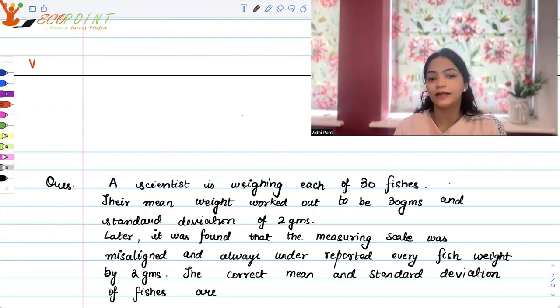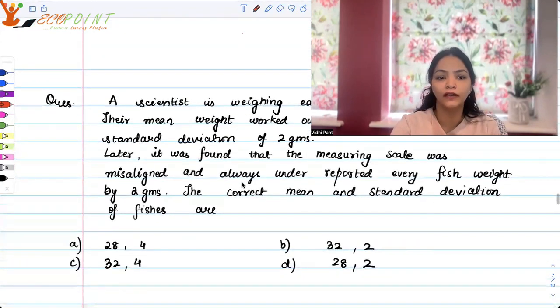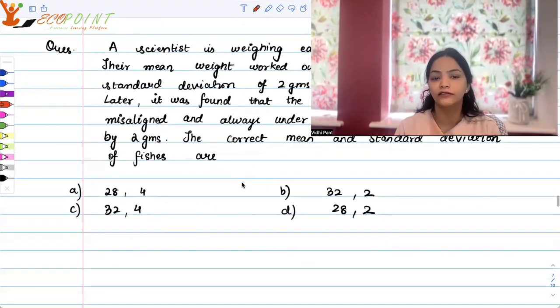The correct mean and standard deviation of the fishes are: your options are 28, 4; mean 32, standard deviation 2; mean 32, standard deviation 4; mean 28, standard deviation 2.